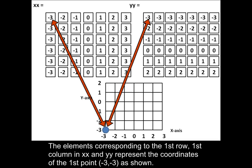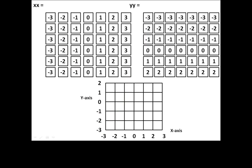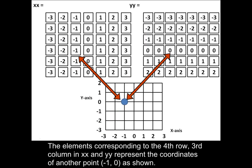The elements corresponding to the first row, first column in XX and YY represent the coordinates of the first point, minus 3, minus 3, as shown. The elements corresponding to the fourth row, third column in XX and YY represent the coordinates of another point, minus 1, 0, as shown.